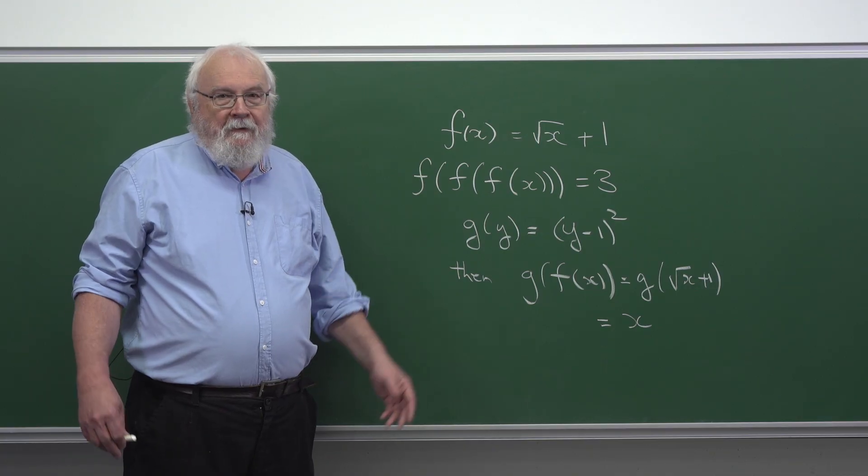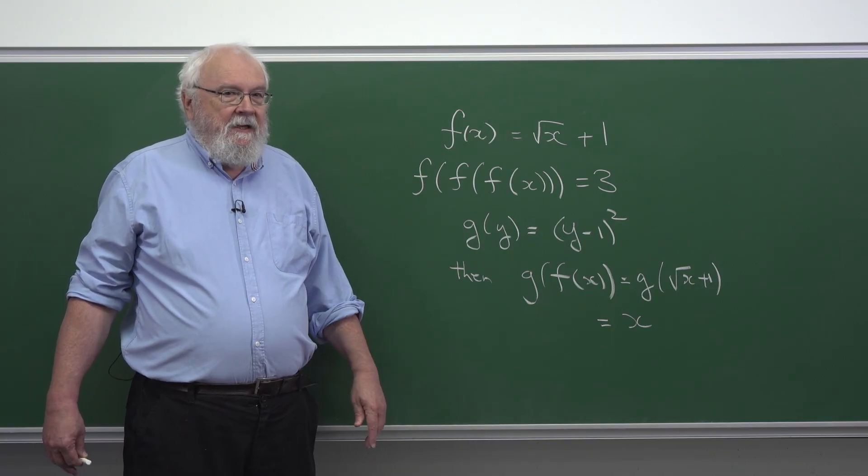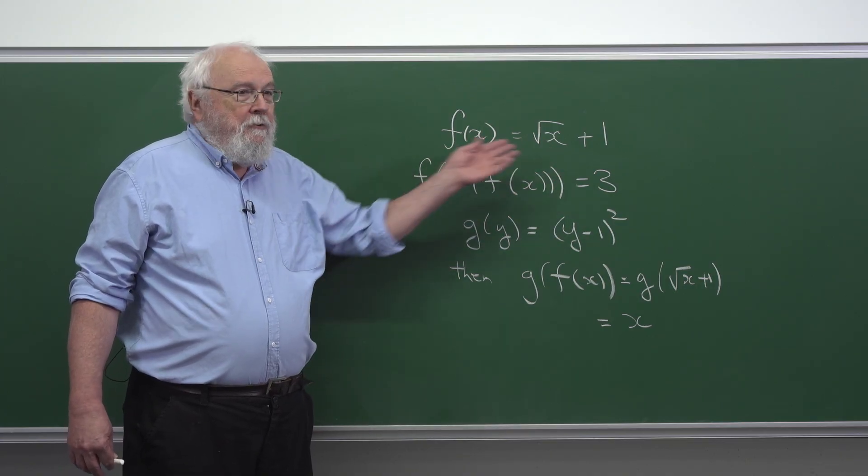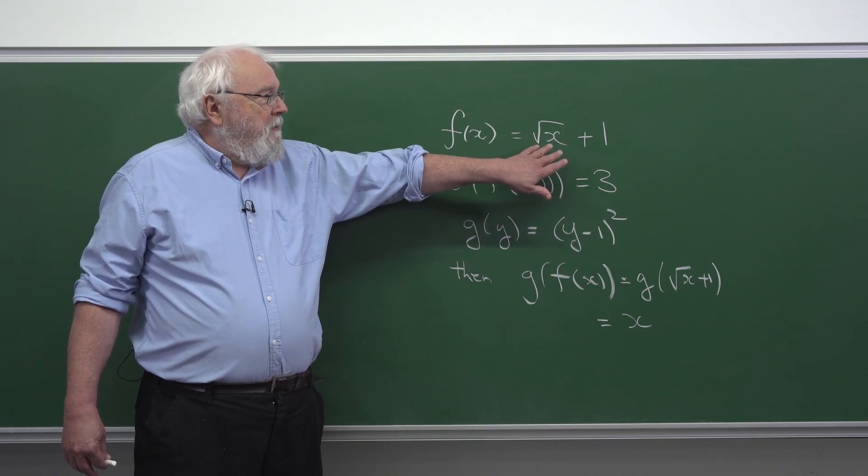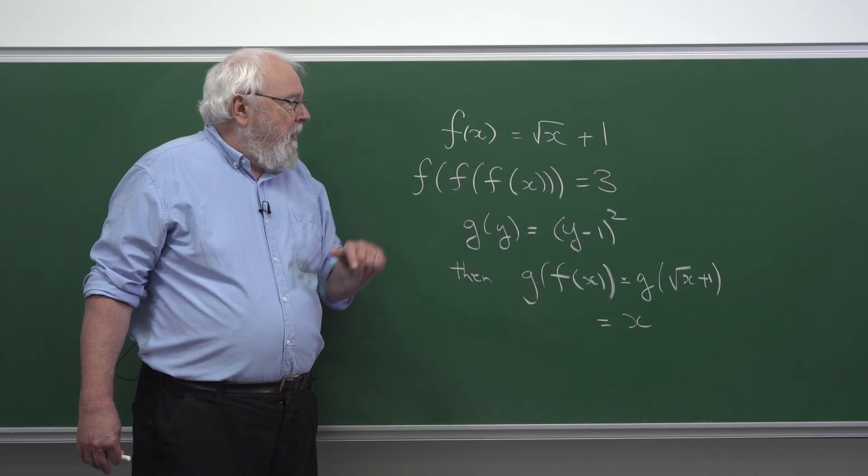Well, you've given a variety of possible answers and you could plug them in, but there's an easier way. What you could do is notice that you can undo the work of this function. If I told you the value of the square root of x plus 1, you could work out x. And how would you do that?